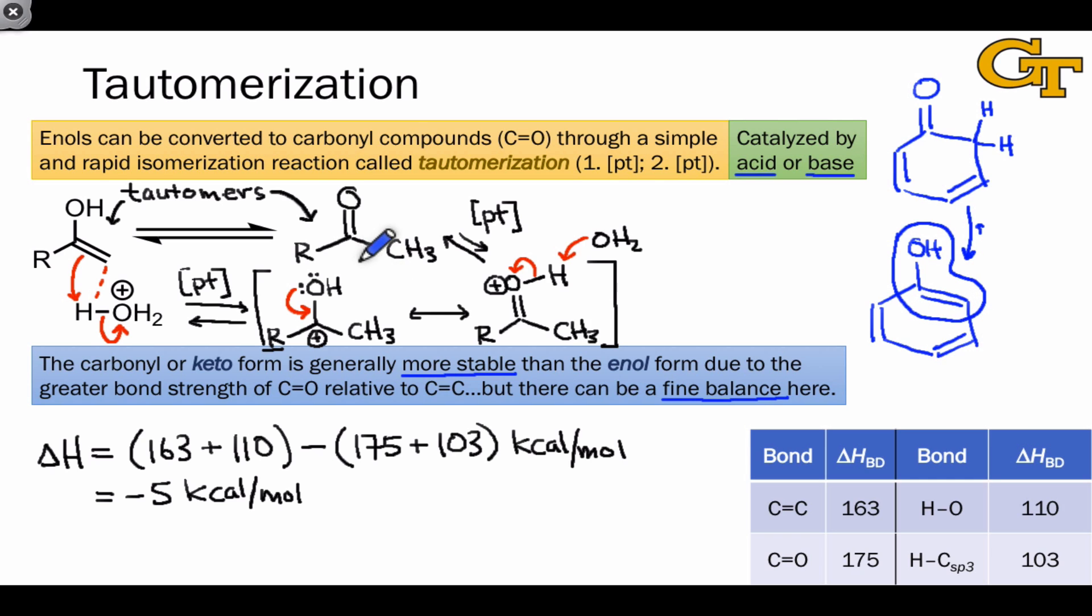In general, it's worth keeping in mind at this point that the keto form of a carbonyl compound, which actually contains the carbon-oxygen double bond, is generally more stable than the enol form, and so we should avoid drawing enol forms when a more stable keto form exists. A big driver for the favorability of the keto form is the remarkable stability of the carbon-oxygen double bond, as exemplified quantitatively by its bond dissociation enthalpy.